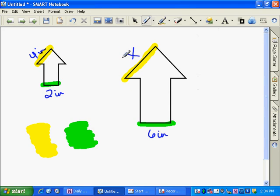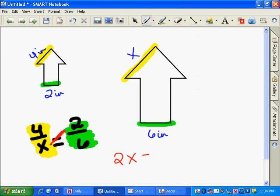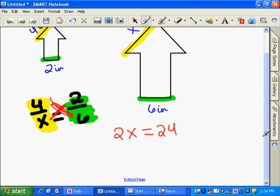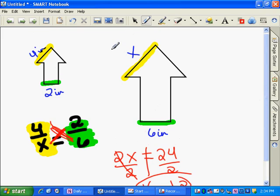And for yellow, I've got 4 over x is equal to 2 over 6. Since I went from little to large on the yellow, I need to go from small to large on the green. So that's 2 over 6. So now I'm going to cross multiply. 2x is equal to 4 times 6, which is 24. And I'm going to divide both sides by 2. And I get x is equal to 12. So that means this side is equal to 12 inches.